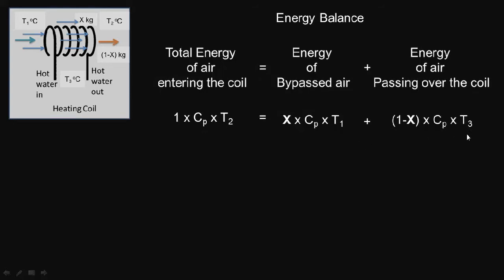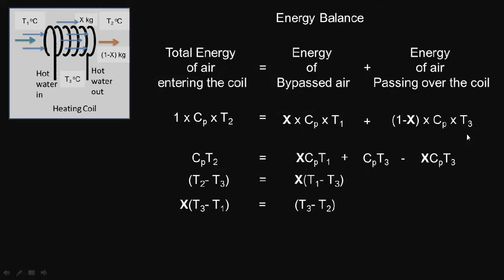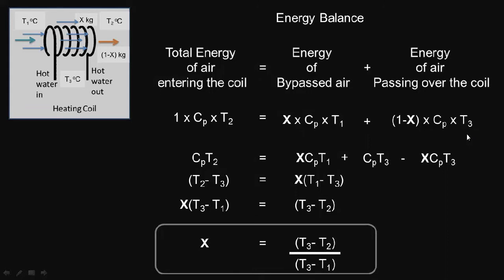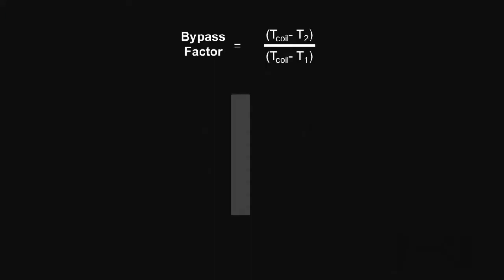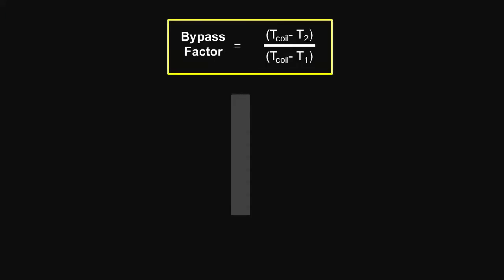After solving this equation for x, we get the final value of x as (T3 - T2) / (T3 - T1), where T3 is the temperature of the heating coil, T2 is the temperature of air leaving the coil, and T1 is the temperature of entering air. The term x is defined as the bypass factor of the coil, which can also be written as: Bypass Factor = (T_coil - T2) / (T_coil - T1).